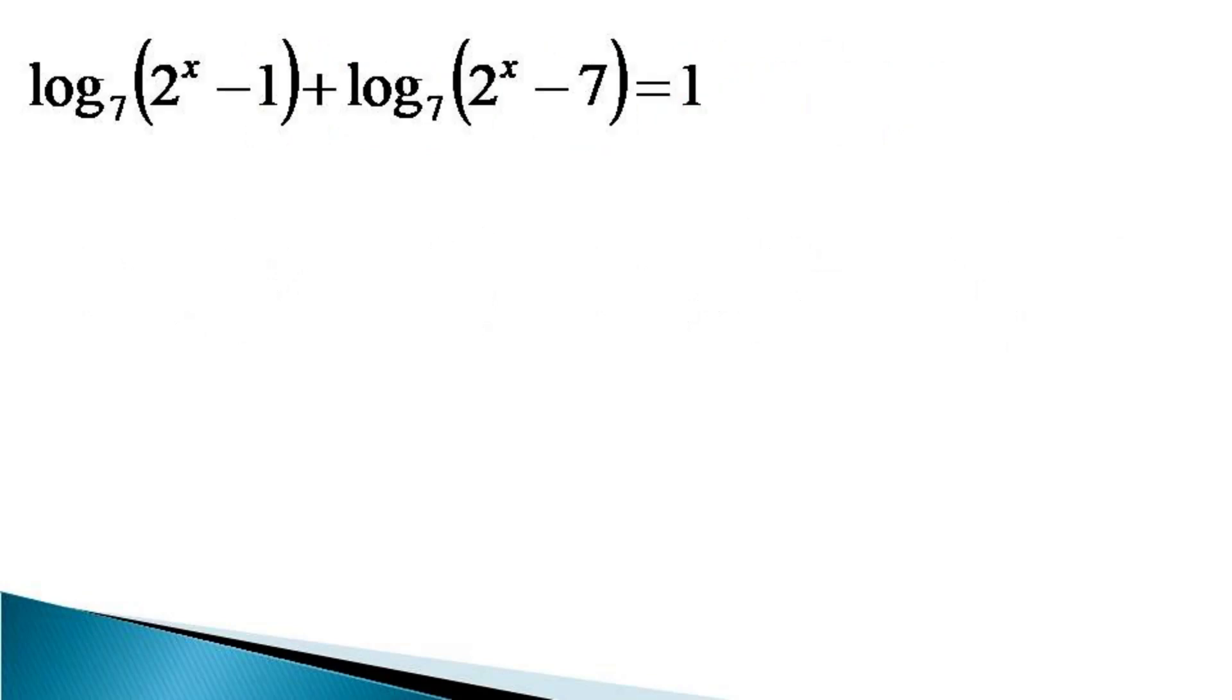To solve this equation, first thing we notice that the bases of both the logarithmic terms are same. Hence, we can use multiplication rule of log and the equation transforms to log of (2^x - 1) × (2^x - 7) to the base 7 is equal to 1.